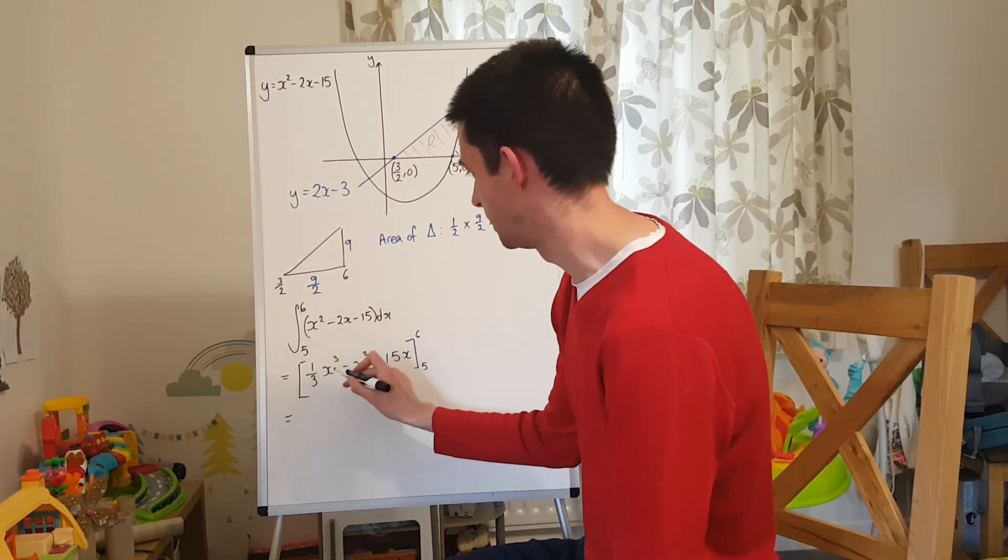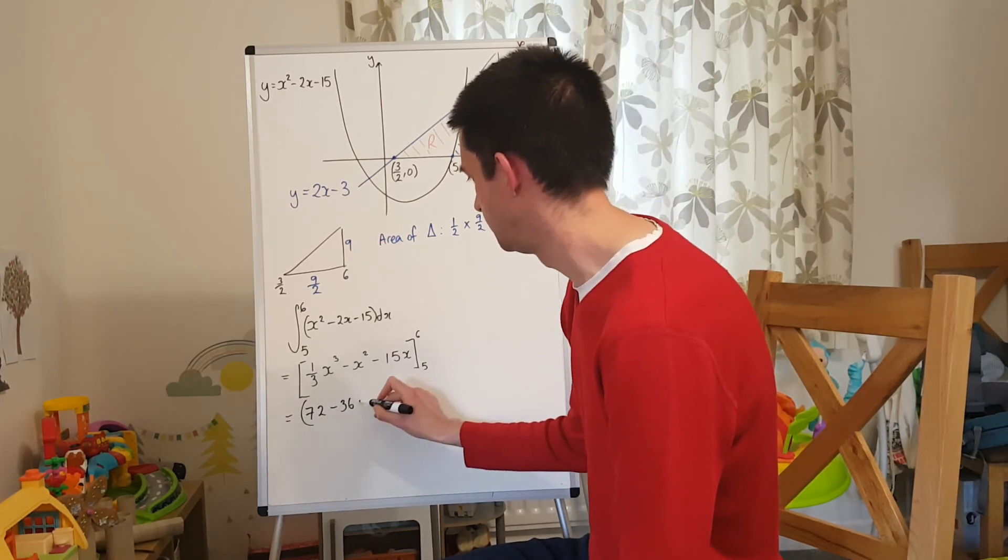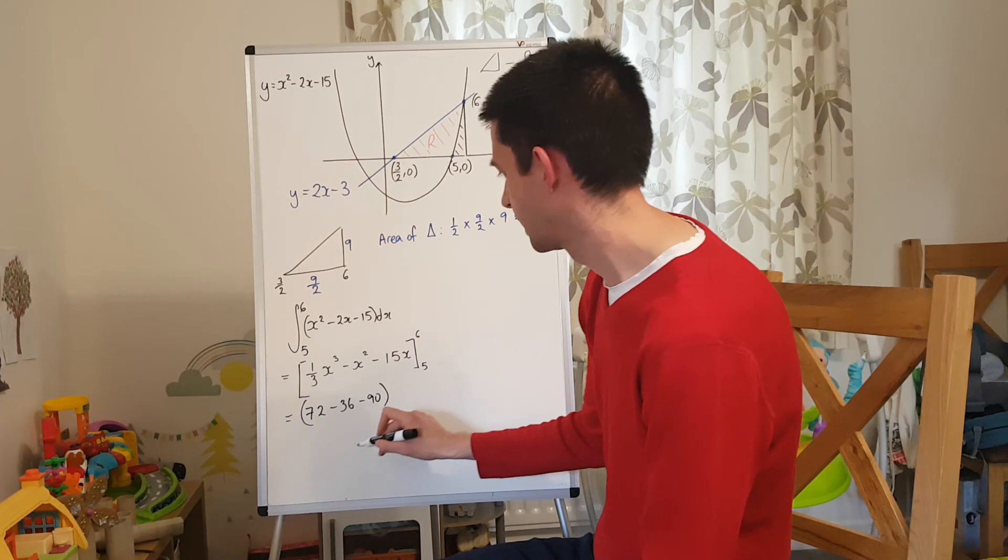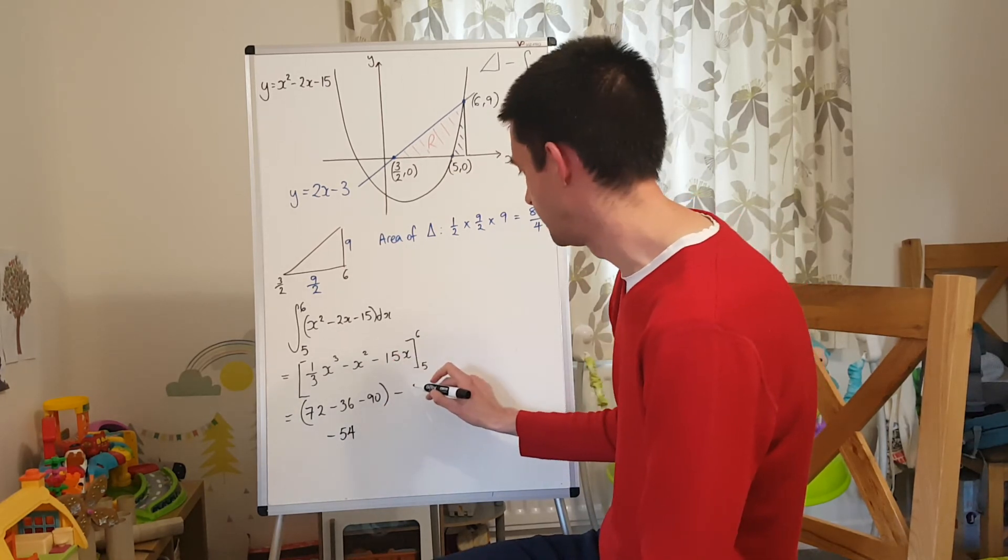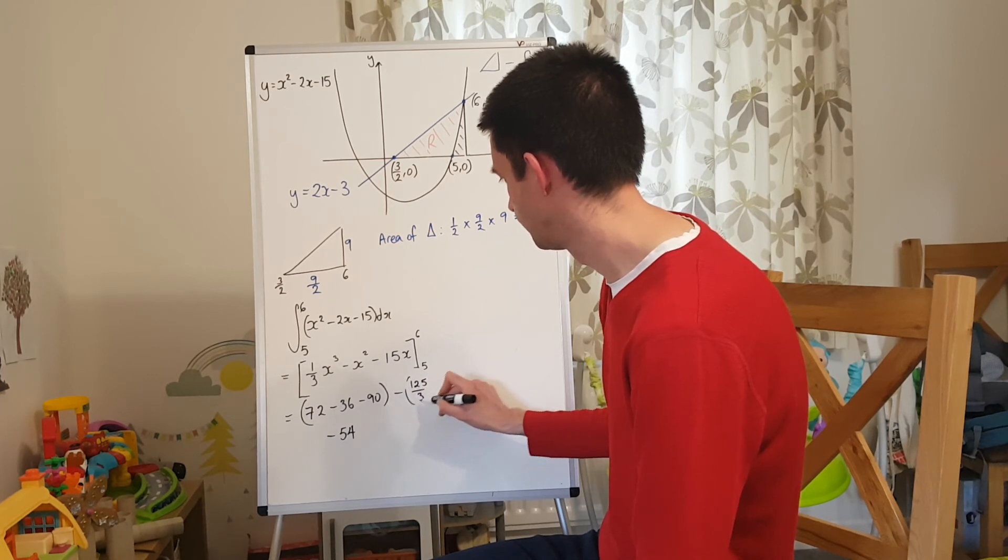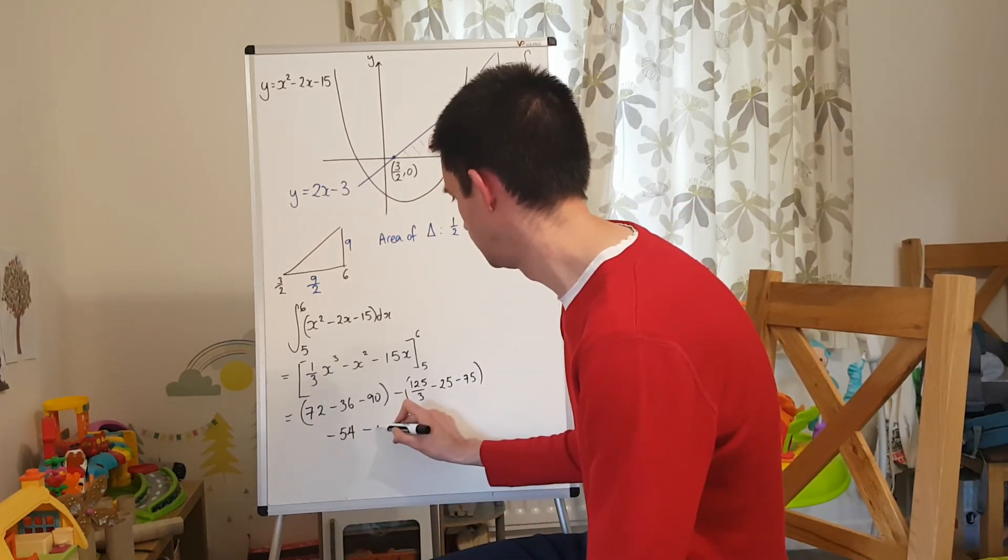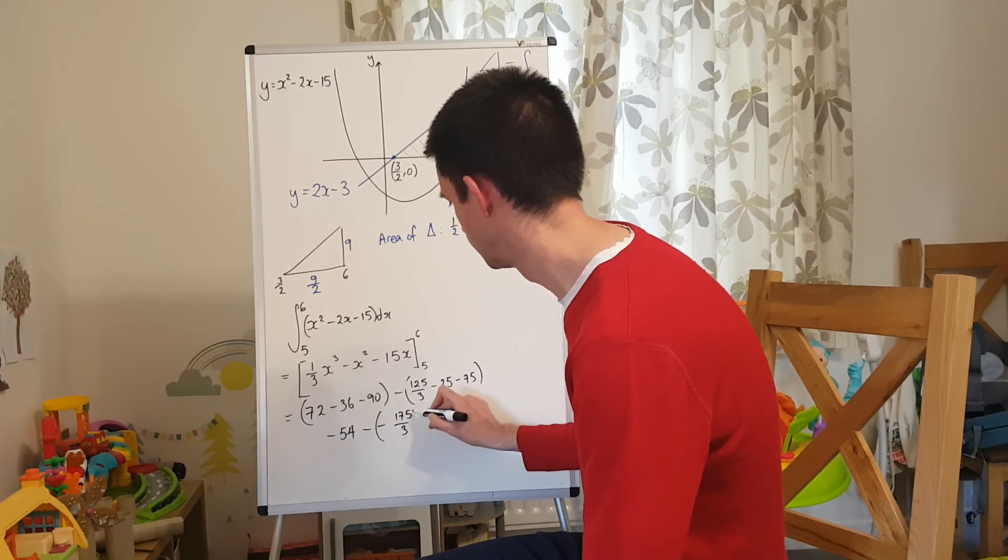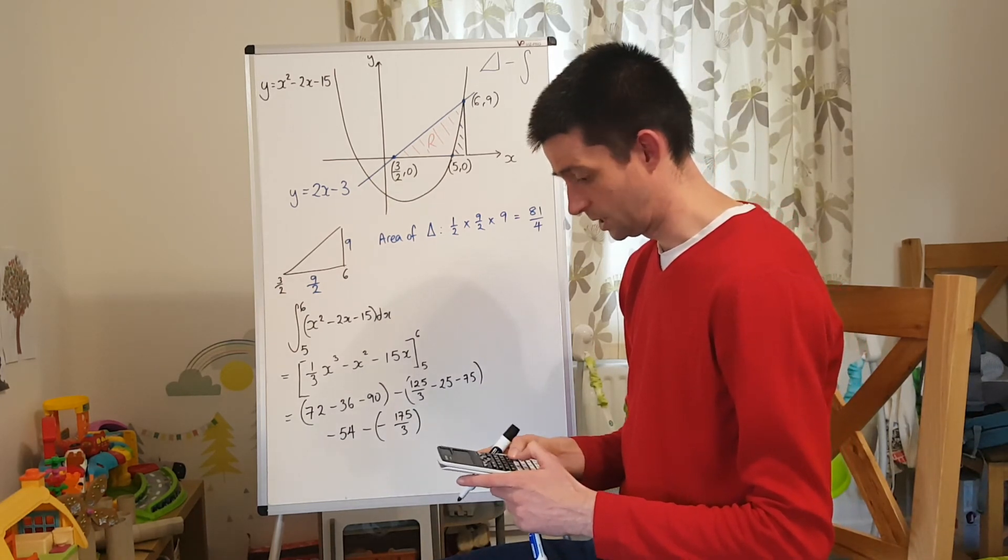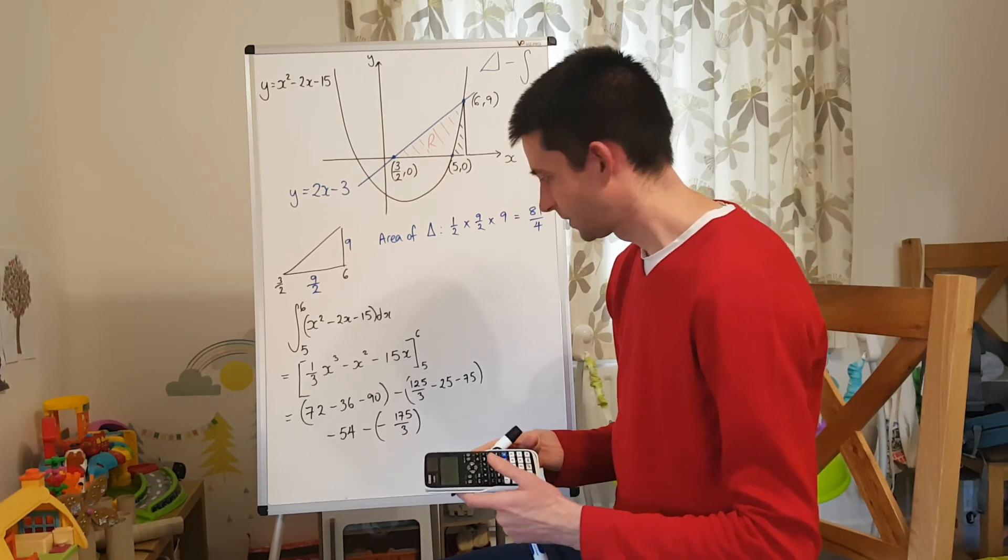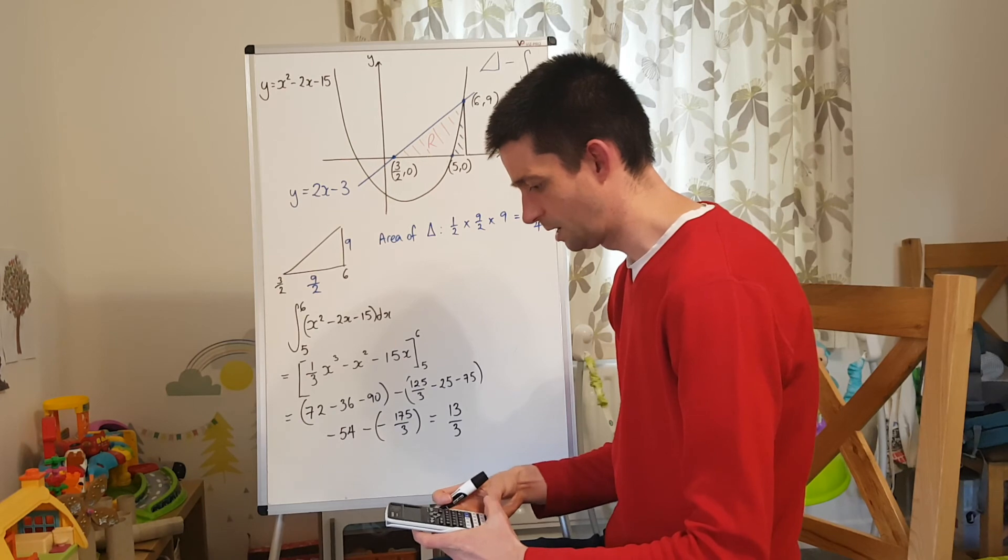Substituting in 6, I'd have a third of 6 cubed, which is 72. Minus 6 squared, which is 36. Minus 15 lots of 6, which is 90. So that's going to be negative 54. And then I'm going to take away when you sub in 5. So that's going to be 125 over 3 minus 25 minus 75. So that's negative 175 over 3, which I'll take it away. So negative 54, take away, or plus I should say, 175 over 3 is 13 over 3. Now 13 over 3 is the blue bit, this blue shaded area here.